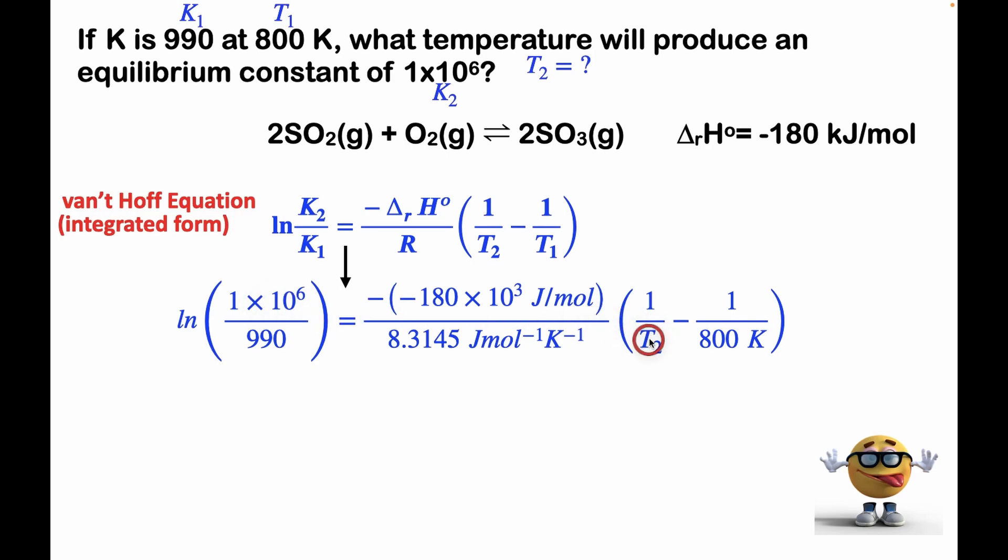This is the K2. This is temperature 2 that we want. We want the standard change in enthalpy to be in joules per mole. So this is given in kilojoules, so we want to convert it into joules because we want to use the R that has units of joules in, so joules cancel out.